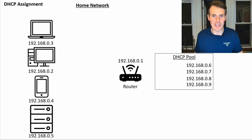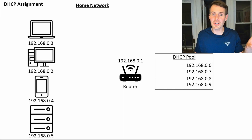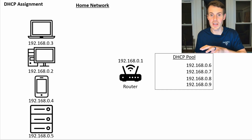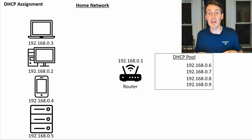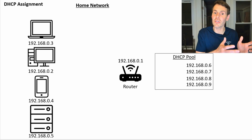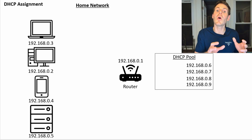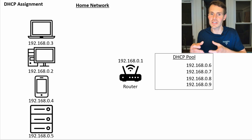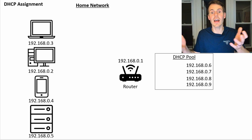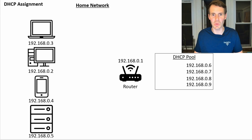And this is the beauty of DHCP. You don't have to worry about your devices getting assigned IP addresses every time they connect to a new network, because whatever the DHCP server of that network is, it will automatically assign your device an IP address from the DHCP pool.